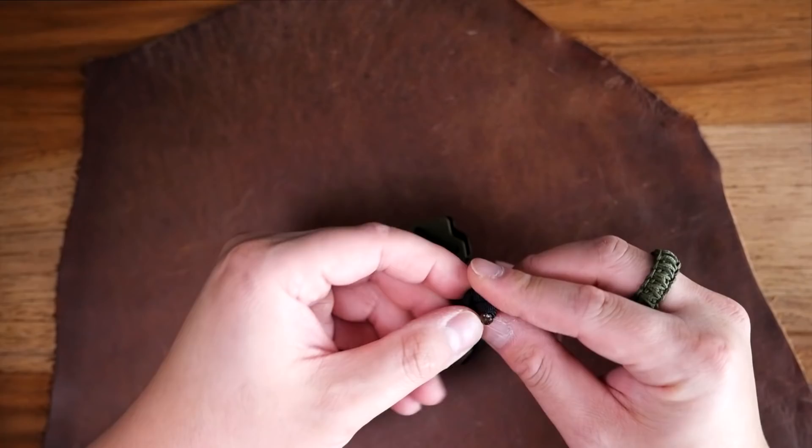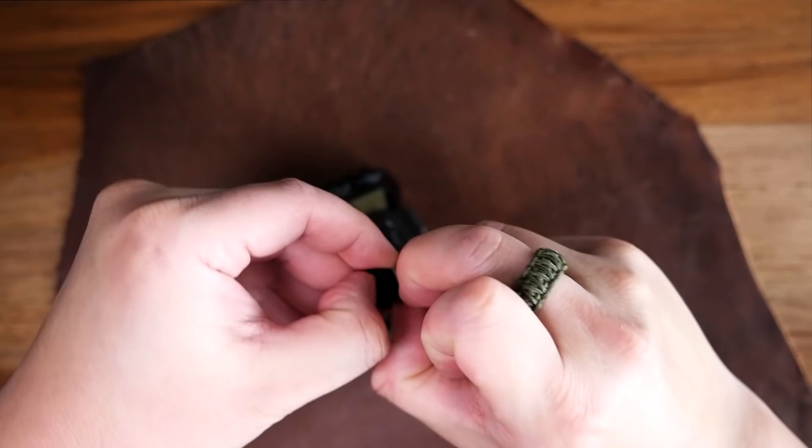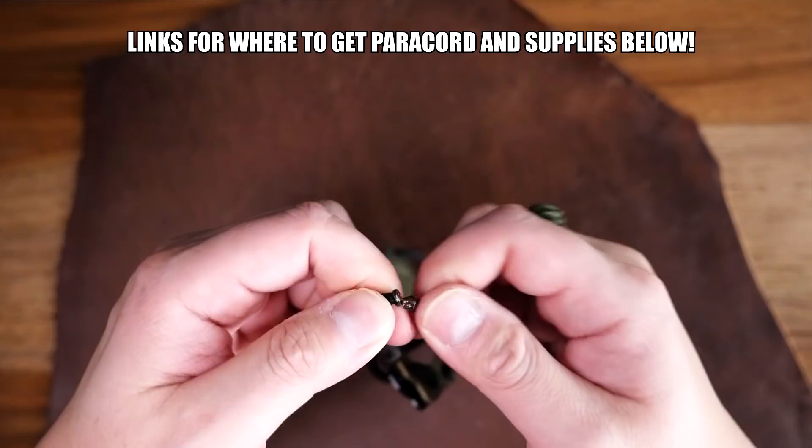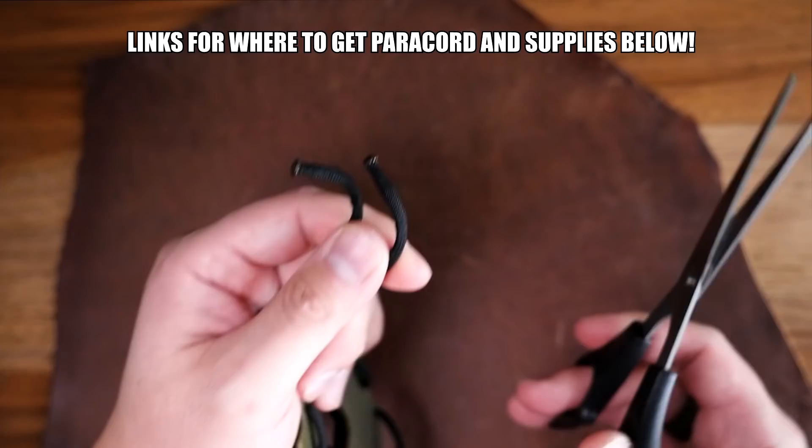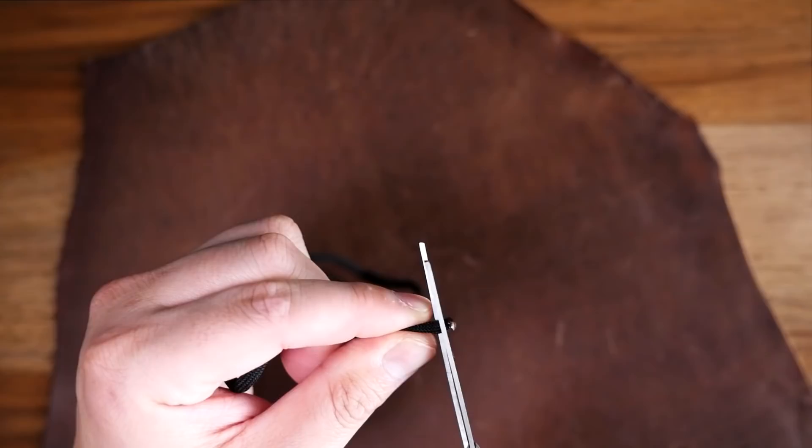So when you first get the Travax Original 2.0 wallet it will come pre-laced with paracord. I got the OD Green version which came with this black paracord on it and it works just fine with the stock paracord but it does leave a bit to be desired so we're just going to remove the paracord from this wallet.